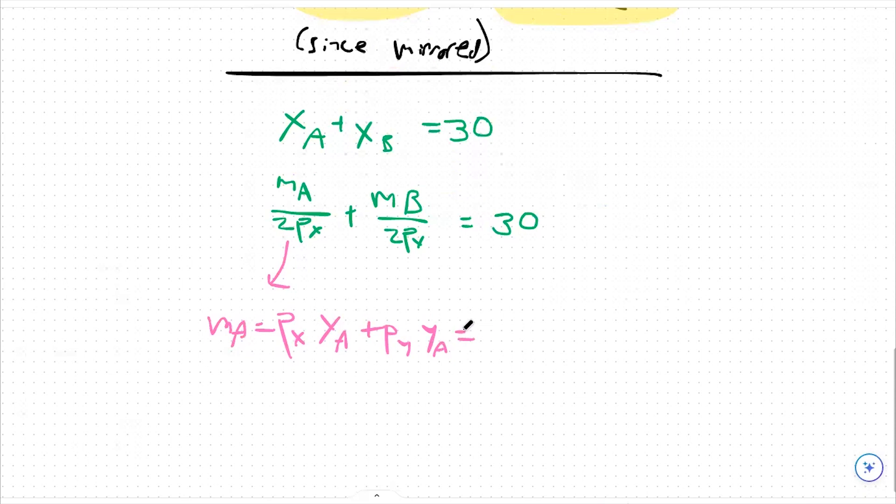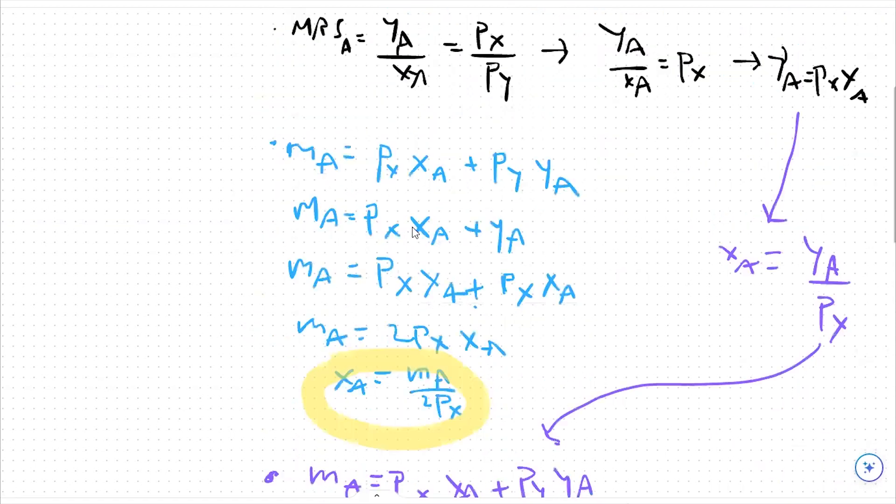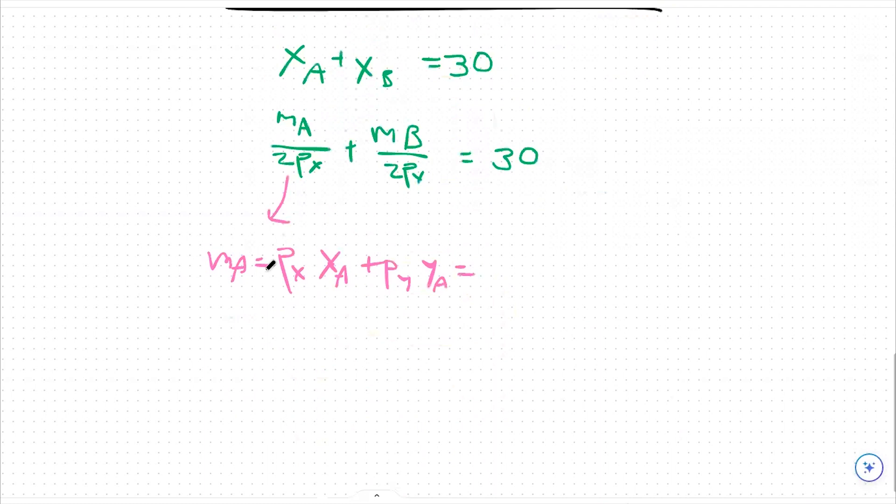What it's also equal to is the endowment that person A receives. So if we're going all the way up to question one, person A starts with 30 units of x and zero units of y. So I'm going to plug that into my budget constraint.